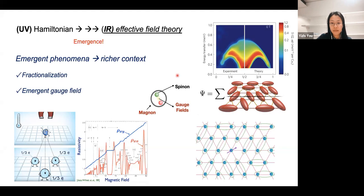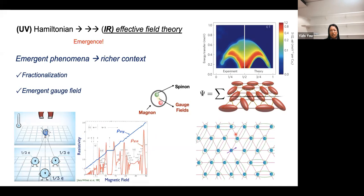The Hilbert space of a many-body system grows exponentially with the system size, making it very hard to write down the Hamiltonian explicitly even with advanced numerical or analytical tools. In addition, for many-body systems we can in principle write down an infinite number of UV Hamiltonians or concrete lattice models, so it is not efficient to study them one by one. One method I will apply is to develop something called effective field theory.